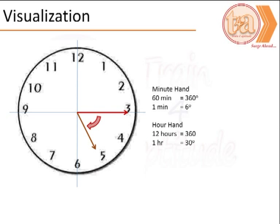We could visualize 5:15 as shown. For every minute covered by the minute hand, it is equivalent to 6 degrees, while that of the hour hand, 1 hour would be 30 degrees.